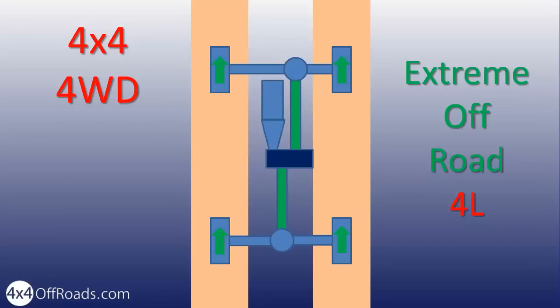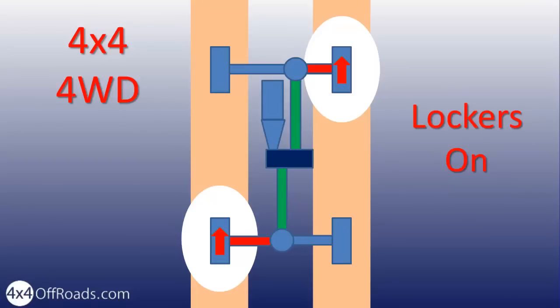But what happens when one wheel on each axle loses traction? Then they both start spinning and you are stuck again. Now having lockers is a must. Engaging lockers on the differentials makes each pair of wheels turn at the same speed and gets you out.